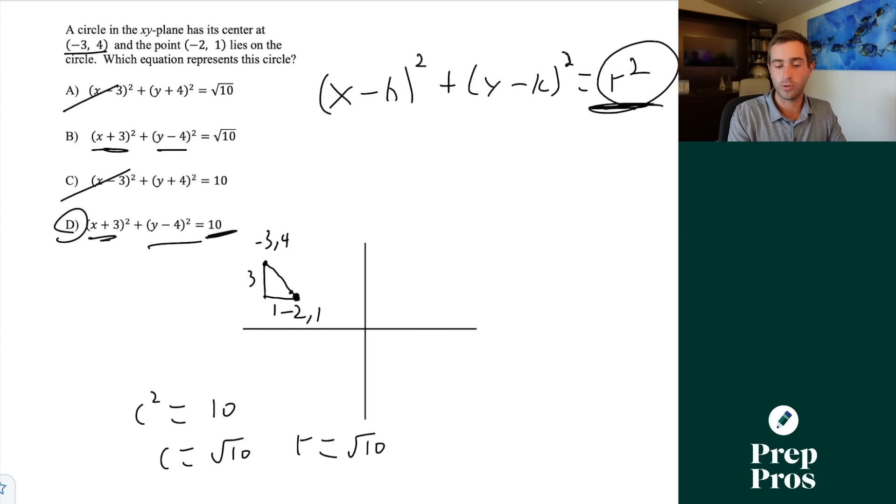Now the cheating way that you can go through this and you can use this so many places on the SAT is if we have a point on a line or on a shape. If we plug in our x value and we plug in our y value and both sides of the equation are equal to each other that tells us it's the correct equation. So when we plug in negative 2 and 1 only equation d is going to also give us our correct value of equaling 10.